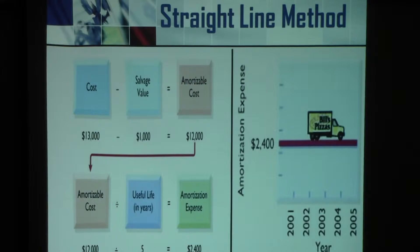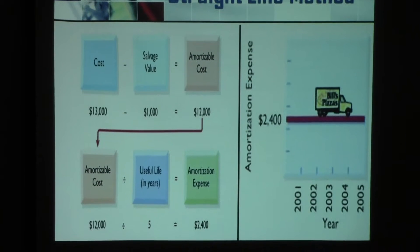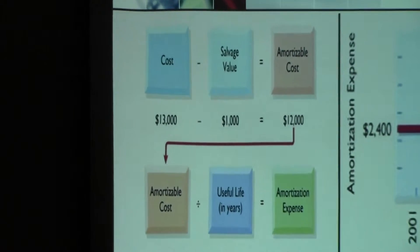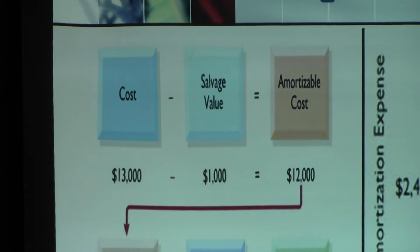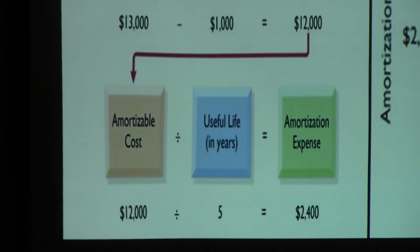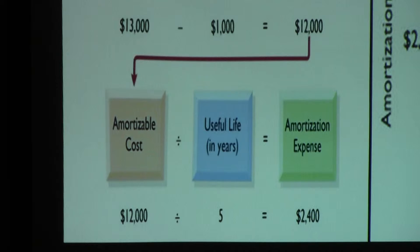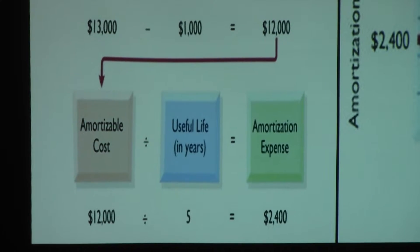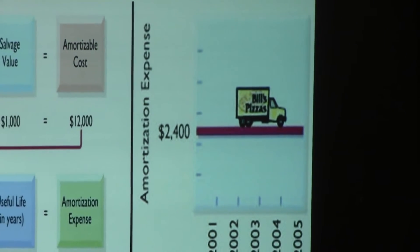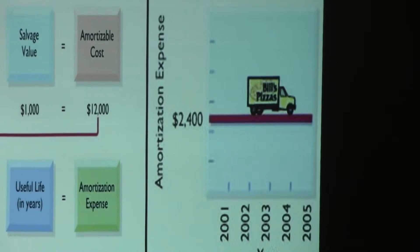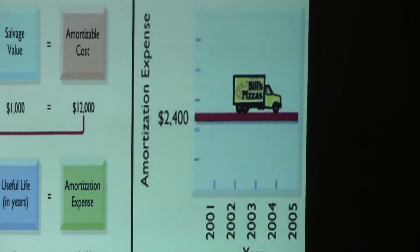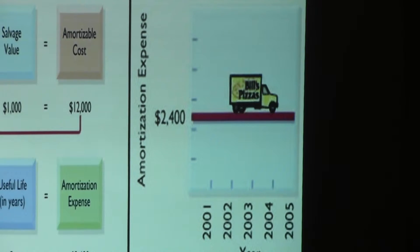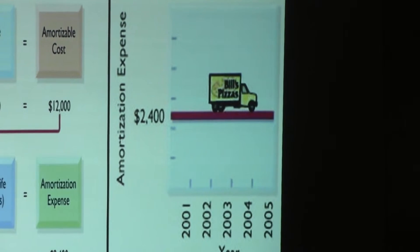Graphically, the straight-line method looks like this: you start with cost, subtract salvage value to get the amortizable cost, then divide the amortizable cost by the useful life in years to get the annual amortization expense. As you can see from the graph, each year the amortization expense is the same amount. There are various amortization methods, but in this course we only learn the straight-line method.